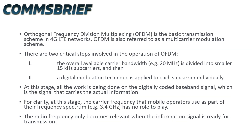Orthogonal frequency division multiplexing, or OFDM, is the basic transmission scheme in 4G LTE networks and is also referred to as a multi-carrier modulation scheme. There are two critical steps in the operation of OFDM. One: the overall available carrier bandwidth — for example 20 MHz — is divided into smaller 15 kHz subcarriers. And two: a digital modulation technique is applied to each subcarrier individually. At this stage, all the work is being done on the digitally coded baseband signal, which carries the actual information. The carrier frequency that mobile operators use — for example 3.4 GHz — only becomes relevant when the information signal is ready for transmission.